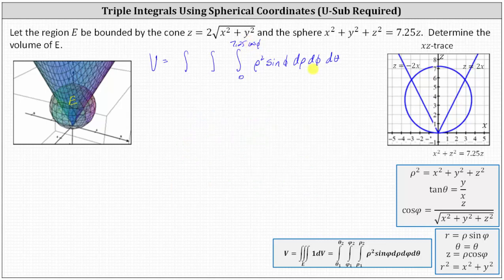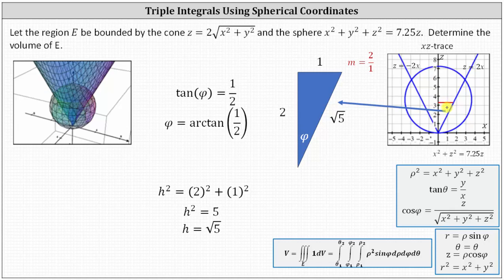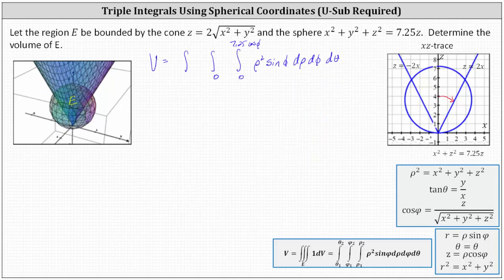Now we determine the limits of integration for phi, which is the angle from the positive Z axis. The lower limit of phi is zero. To determine the upper limit, we form a right triangle by sketching a horizontal segment from the Z axis to the line Z equals two X. Because the slope of this line is two over one, we label the vertical leg two and the horizontal leg one. In relation to phi, we have the adjacent side over the opposite side, which means tangent phi equals one-half, and therefore phi equals arctan(1/2). The hypotenuse has length square root of five. So the upper limit for phi is arctan(1/2).